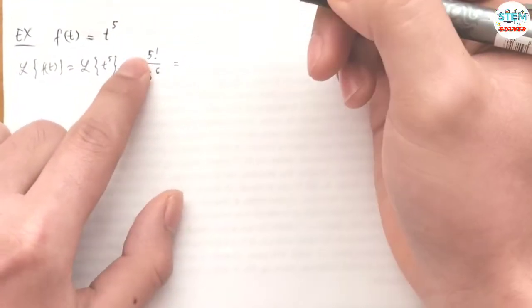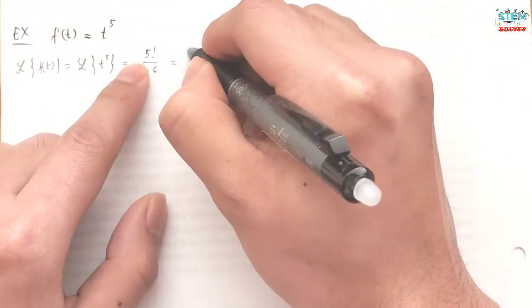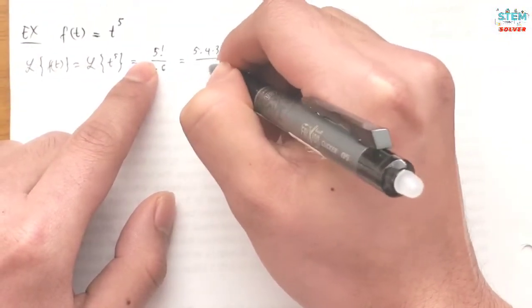So you can multiply this out, or you can leave it like this. I'm gonna multiply this out, so I have 5 times 4 times 3 times 2 over s to the sixth.